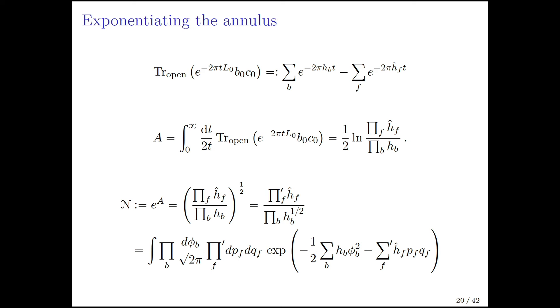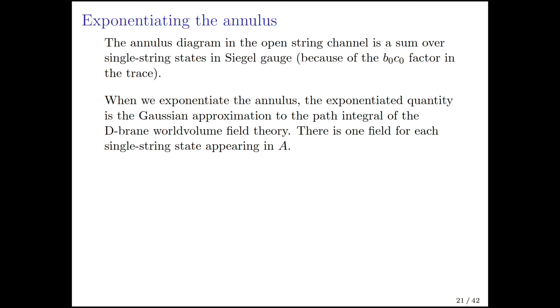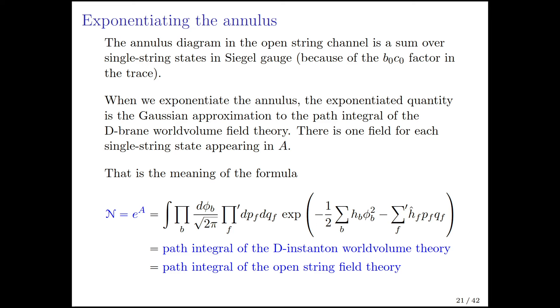We will now see that e to the A is a better quantity to consider, and it is possible to make it well-defined. Here I have written a general expression with bosonic weights Hb and fermionic weights Hf. The t integral that computes the annulus can be done. It gives you one half the logarithm of fermions in the numerator and bosons in the denominator. When you exponentiate this, the logarithm goes away and you get fermion weights in the numerator and bosons in the denominator, which you can write as this Gaussian integral. You introduce a bosonic field Phi b and Grassmann pairs Pf and Qf. The point is that the annulus diagram is a sum over single string states, and the exponential of the annulus is basically just the Gaussian approximation to the path integral of the D-brane worldvolume field theory.